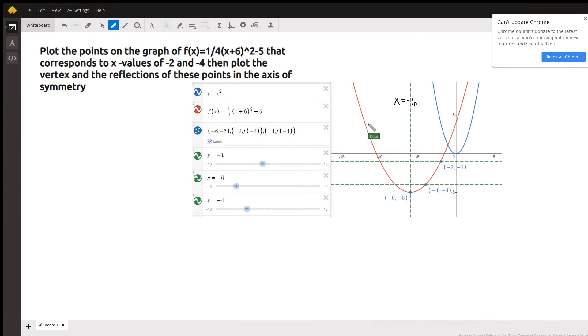Okay, over here to the right, we've graphed the function f(x) equals one-fourth of the quantity x plus six squared minus five. This function is a parabola with its equation written in vertex form.